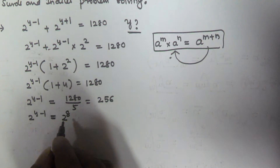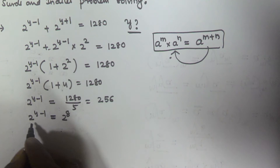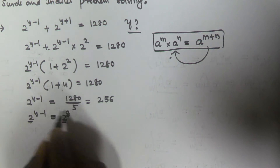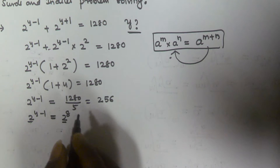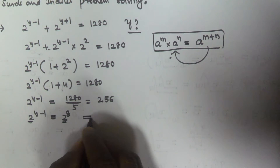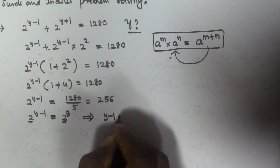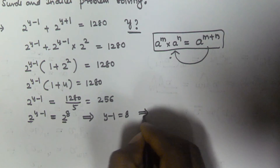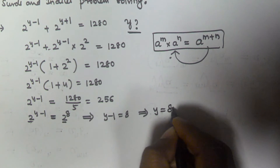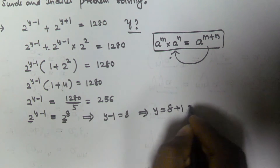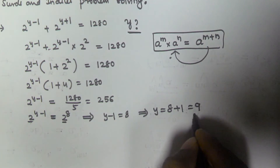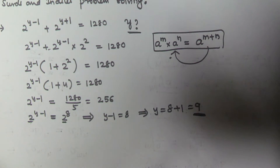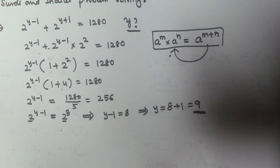Now 256 can be written as 2^8. So 2^(y-1) equals 2^8. Since both bases are the same, the exponents must be equal: y minus 1 equals 8, so y equals 9. The value of y is 9.